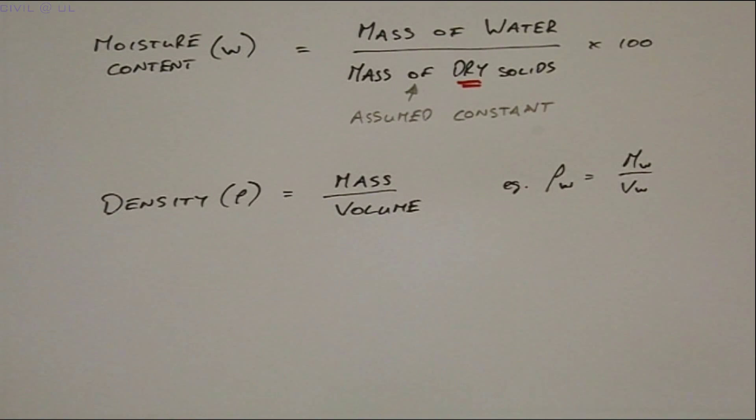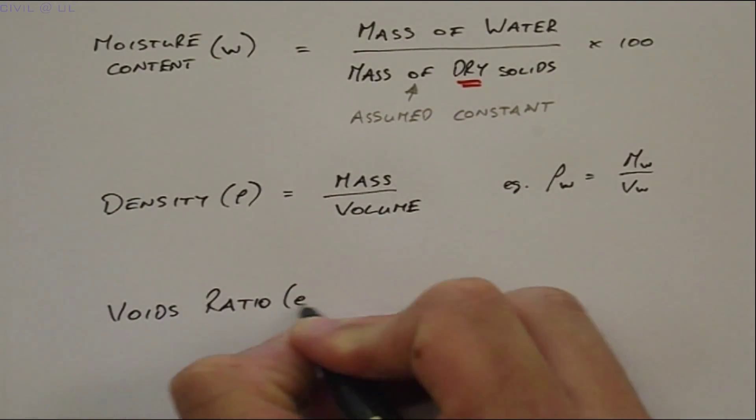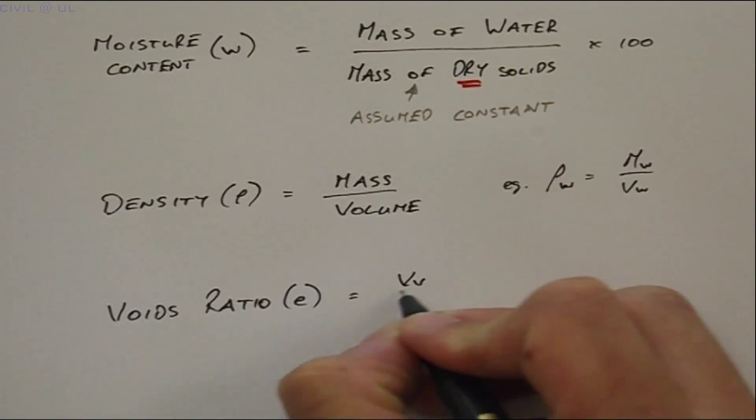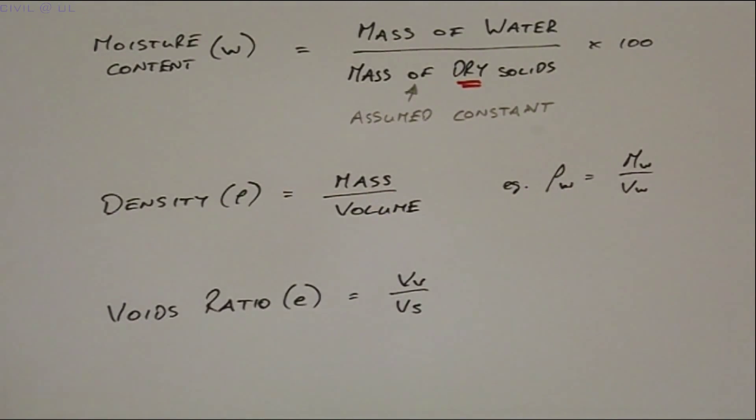Because of the presence of voids, it's useful if we can express the proportion of void space present. We do this by defining the voids ratio, E. The voids ratio is equal to the volume of voids divided by the volume of solids.